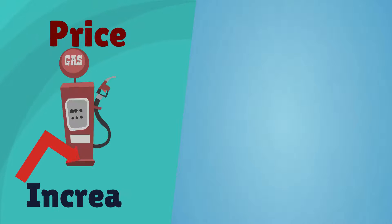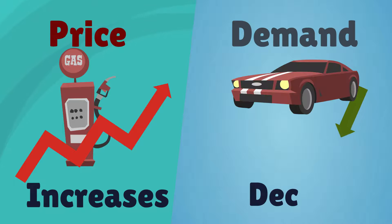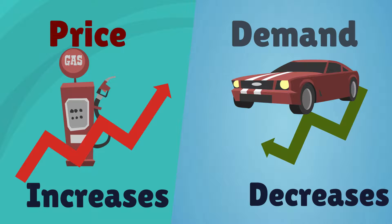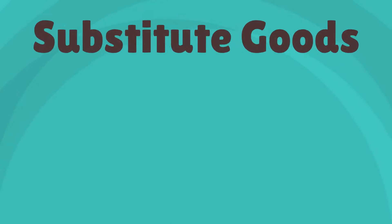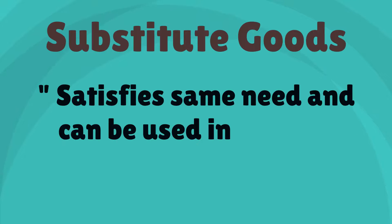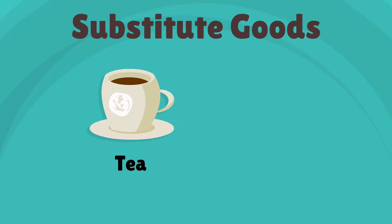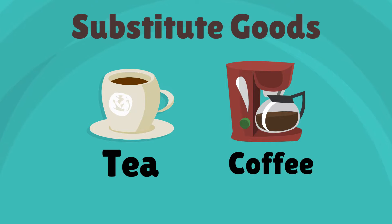Hence, when the price of one complementary good increases, the demand for the other complementary good decreases. Substitutes are goods that can satisfy the same need and hence can be used in place of each other easily. The most common substitute example is tea and coffee.